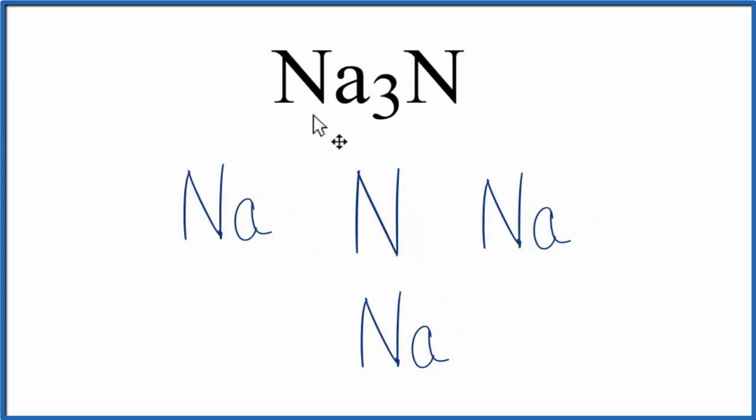Sodium is in group 1 on the periodic table. It has 1 valence electron. So each of these sodiums has 1 valence electron in its highest energy level. Nitrogen is in group 15, sometimes called 5A. It has 5 valence electrons.